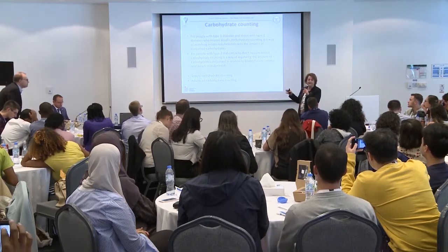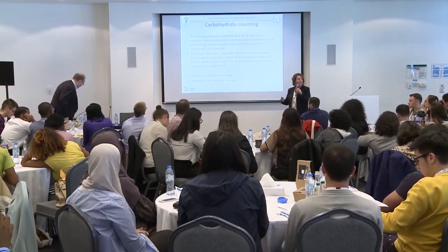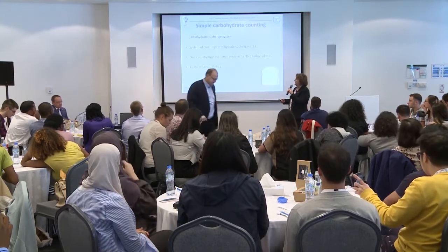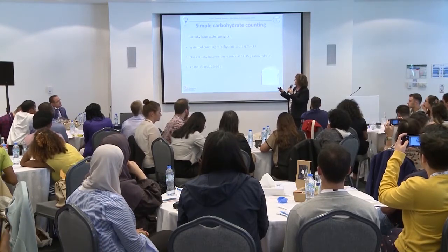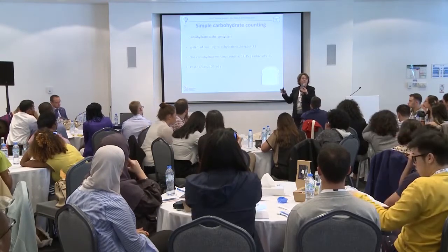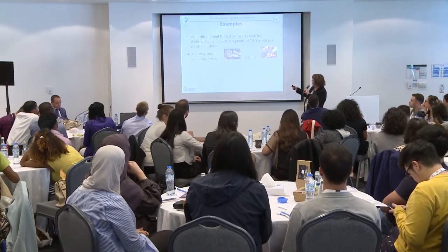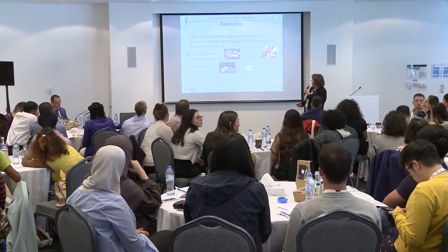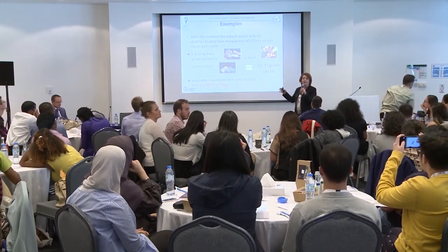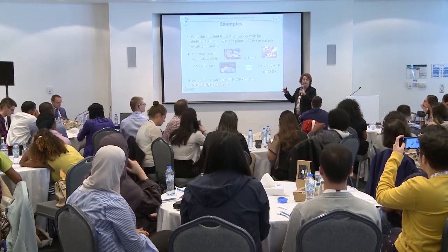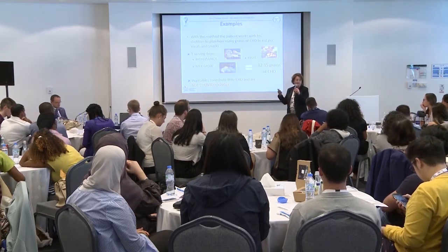There is basic or simple carbohydrate counting and advanced carbohydrate counting. To know the advanced, you should first know the simple system, which is a very simple system of carbohydrate exchanging. One carbohydrate exchange contains 12 to 15 grams of carbohydrates — for example, one piece of bread weighing 25 to 30 grams. One serving from bread, starch, fruit, or the meal group all contain the same 12 to 15 grams. For vegetables, there is no need to count carbohydrates if the quantity is less than 200 grams in your meal.